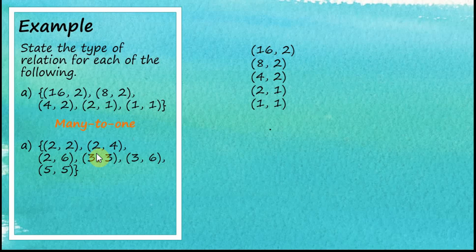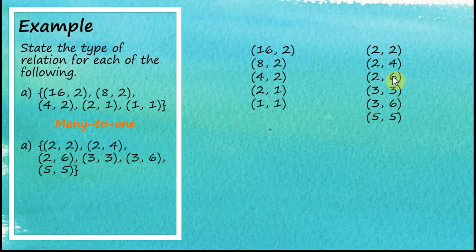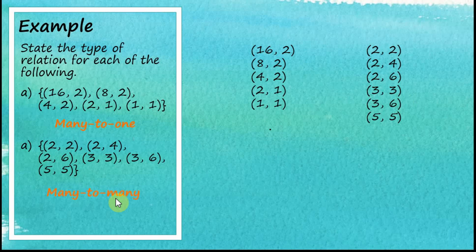And for this one, let's rewrite it. We can see one object mapped to three images, and two objects mapped to two images. And at the same time, we have two objects — 2 and 3 — mapped to the same image. So we have many-to-many: one object to three images, and two objects to one image. Therefore, this is a many-to-many relation.